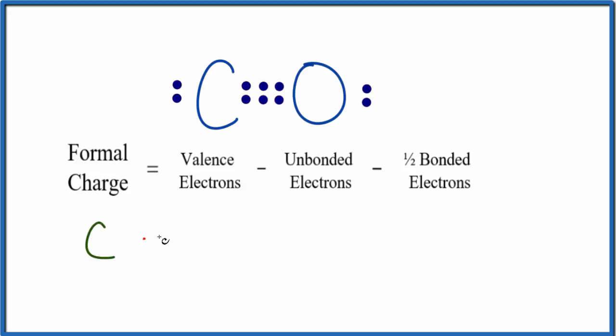So for carbon, we have four valence electrons. It's in group 14, sometimes called 4A, and it has four valence electrons.